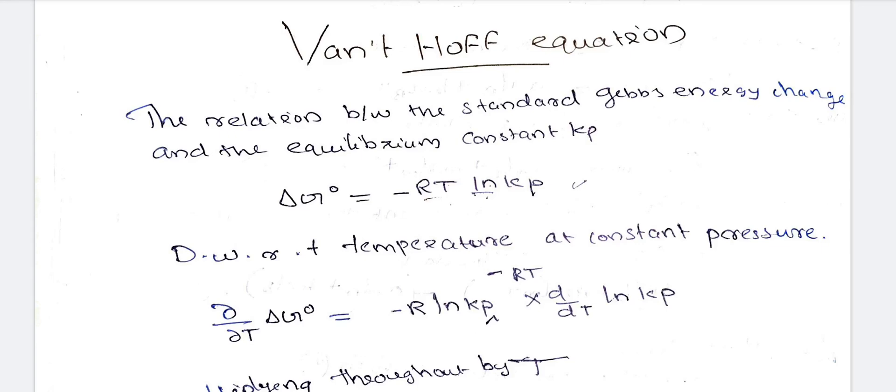We will discuss the relation between standard Gibbs energy change and the equilibrium constant Kp. The key relation is delta G° equal to minus RT ln Kp, and we are going to start from there.